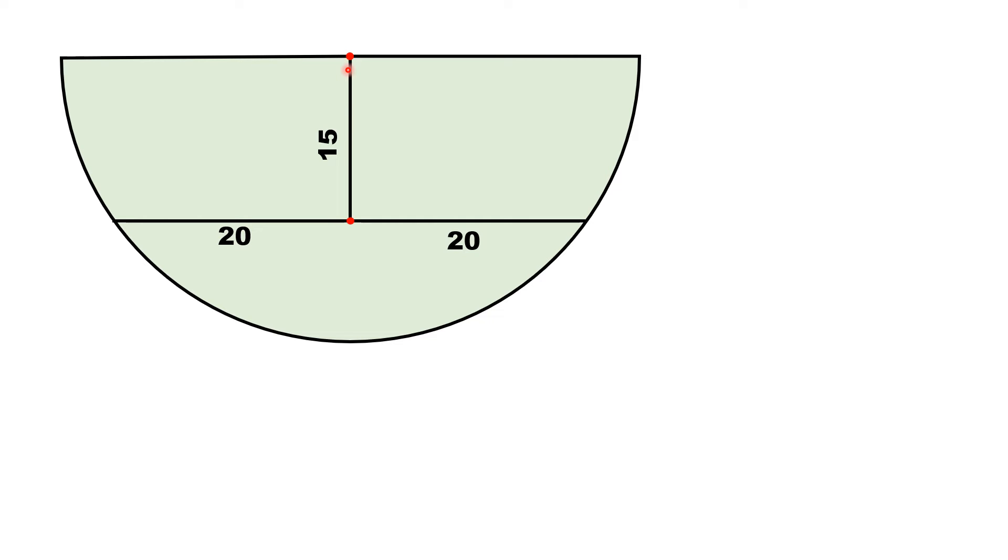And definitely this chord is perpendicular, so this angle is 90 degrees. If we draw a line segment from the center to this particular point, this line segment is actually the radius of the semicircle. Let me denote it by lowercase r. From here, we have a right triangle.